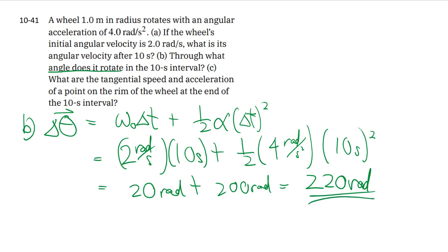So as a rough check, it's 2π radians for every rotation. That's about 6, which is about 5. So we're looking at 40, 50-ish rotations in this 10-second time. Not too insane.